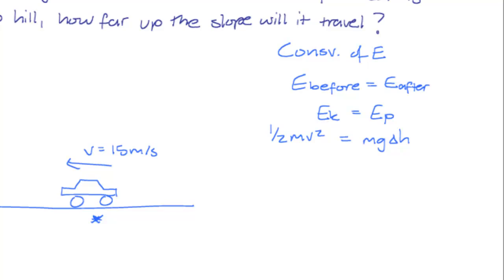Notice that we have m common to both of these equations, so we can cancel m, and we're left with half v squared is equal to g times delta H.